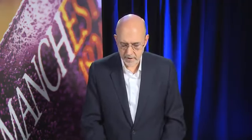The Joint Monitoring Program statistics have addressed several of these problems and really provide us a much better picture today of what's going on around the world in terms of who has improved services and who doesn't. In round numbers, about 800 million people in the world don't have improved water services, and about 2.4 billion people don't have improved sanitation services. About 1.9 billion people without sanitation services are living in Asia today.